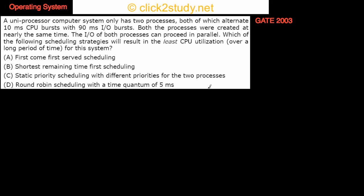This is the next problem. A uniprocessor computer system has only two processes. There are only two processes, both of which alternate 10 milliseconds CPU burst with 90 millisecond IO burst.